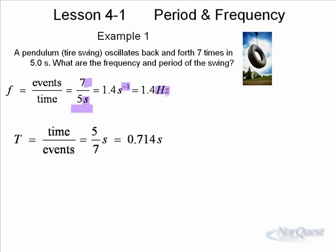The period is, instead of number of events in a given unit of time, it's the time for a certain number of events. We like to put it down to the time for one event. And so you take your five seconds for seven oscillations, and you get five-sevenths of a second, or 0.714 seconds.